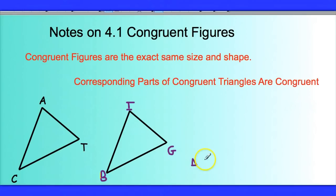So I can see the parts that match up, and I can actually say triangle CAT, C-A-T, is congruent to triangle B-I-G. It doesn't really matter how I name the first triangle. What matters is that I name the second triangle so the corresponding parts match up.